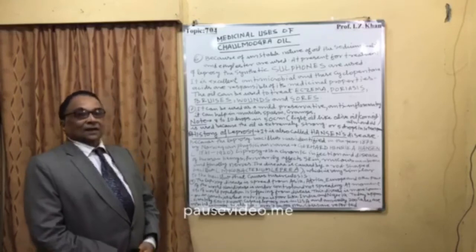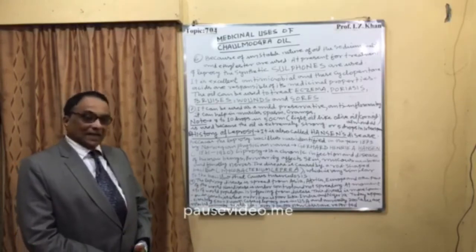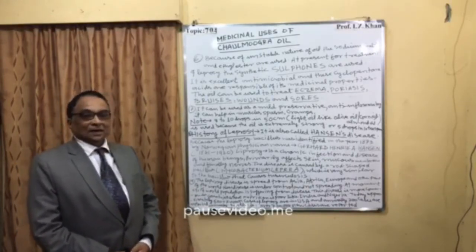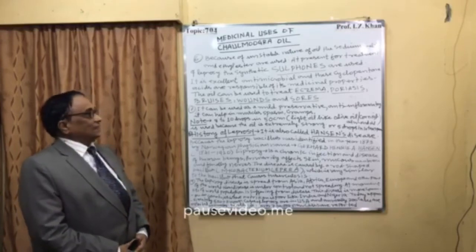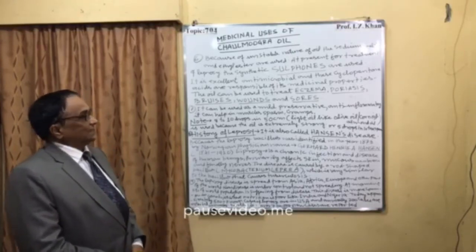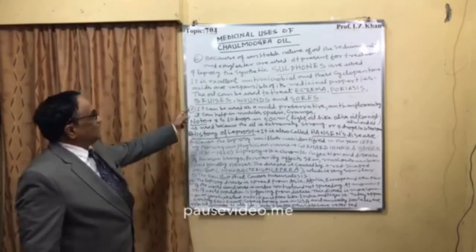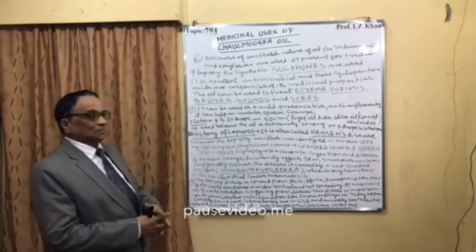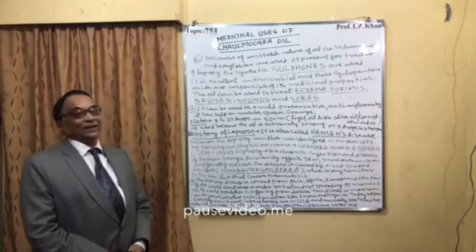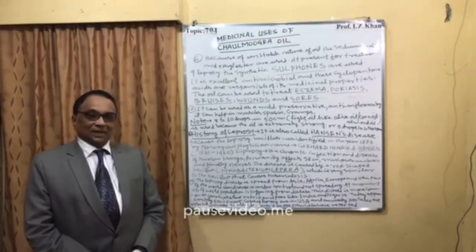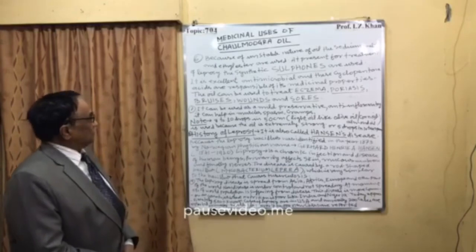Sulfones are very common in use against leprosy and are excellent antimicrobials. The cyclopentane acid is responsible for the medicinal properties. Those three acids — whose structures have already been discussed — are mainly responsible for treating leprosy and tuberculosis. The oil can also be used to treat eczema, psoriasis — meaning skin irritation — and bruises, which is bleeding inside the skin, as well as wounds and sores. For any chronic skin disorder or disease, Chawal Mungra oil is an excellent oil.